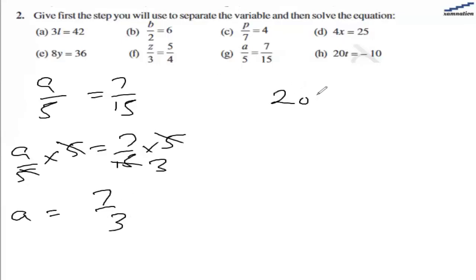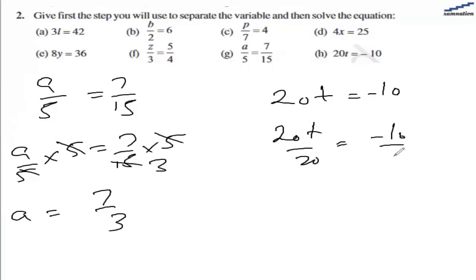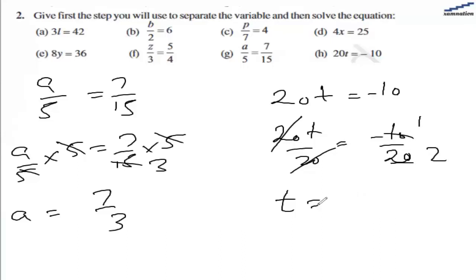For part h we have 20t equal to minus 10. We divide both sides by 20. We have 20t divided by 20 equal to minus 10 divided by 20. The 20s cancel, leaving t. Since 10 is a common factor of minus 10 and 20, we are left with minus 1 by 2. So t equal to minus 1 by 2 is the solution for part h.